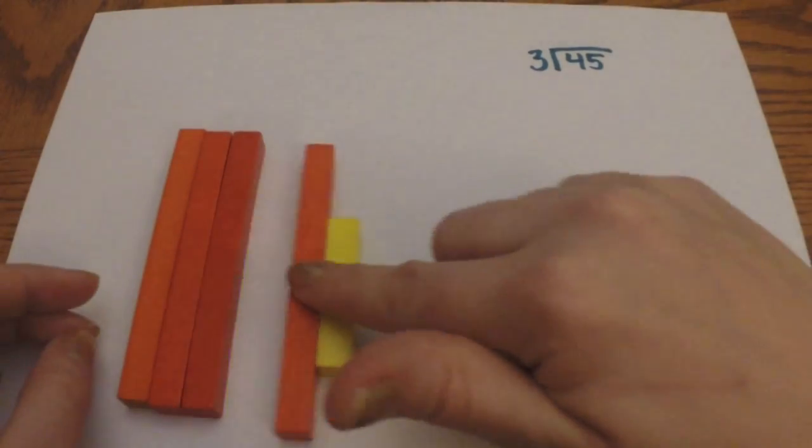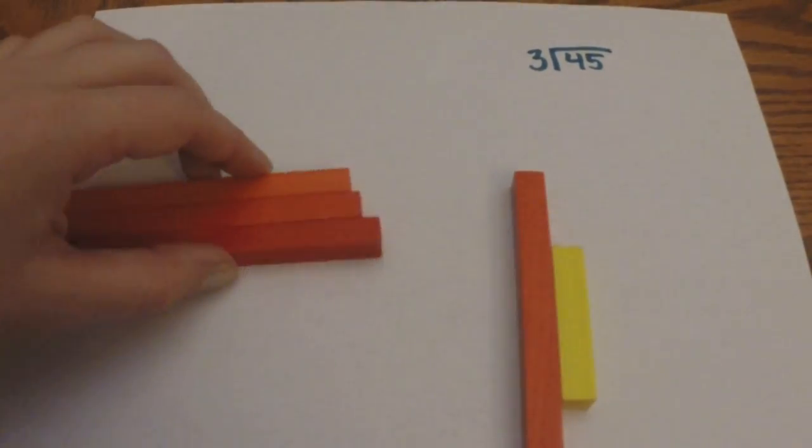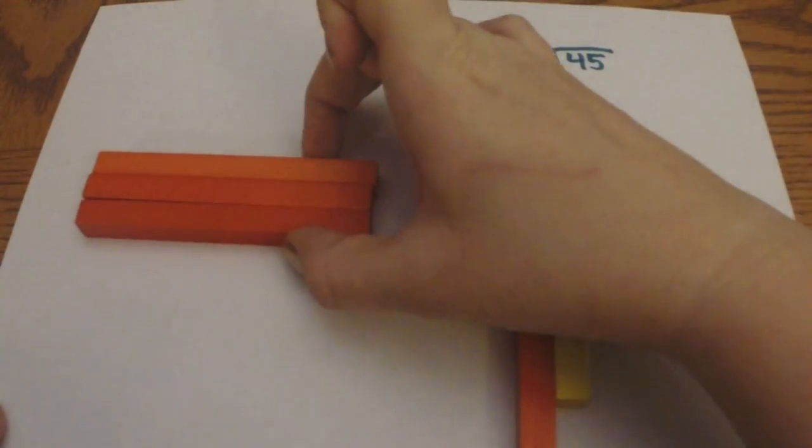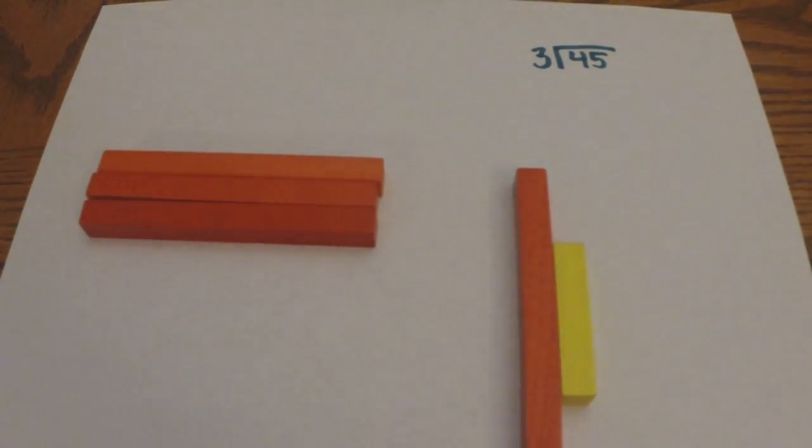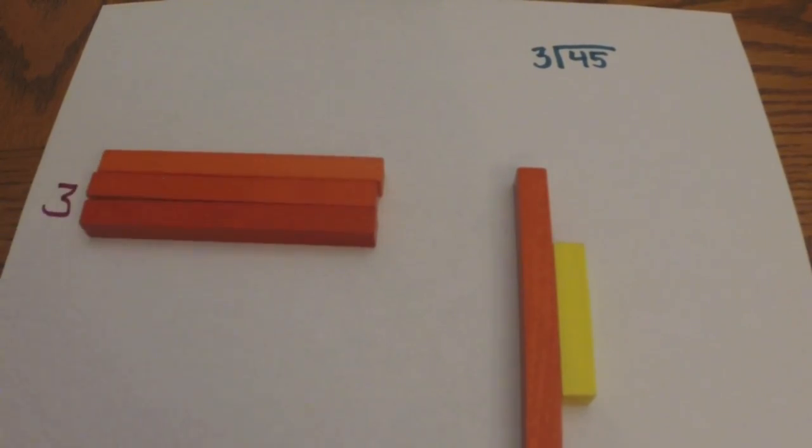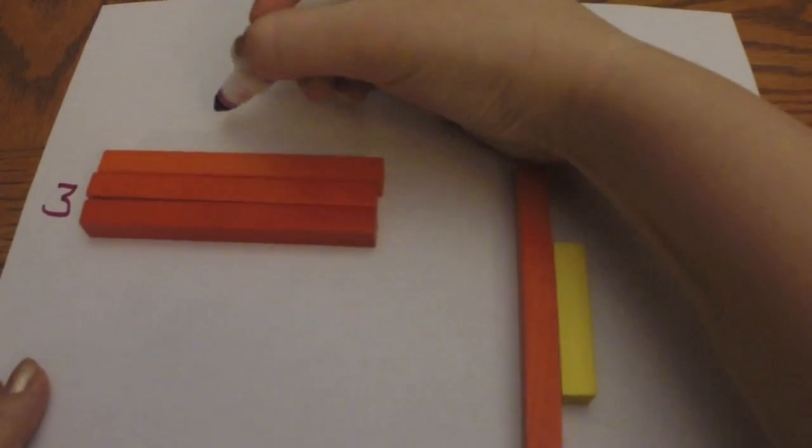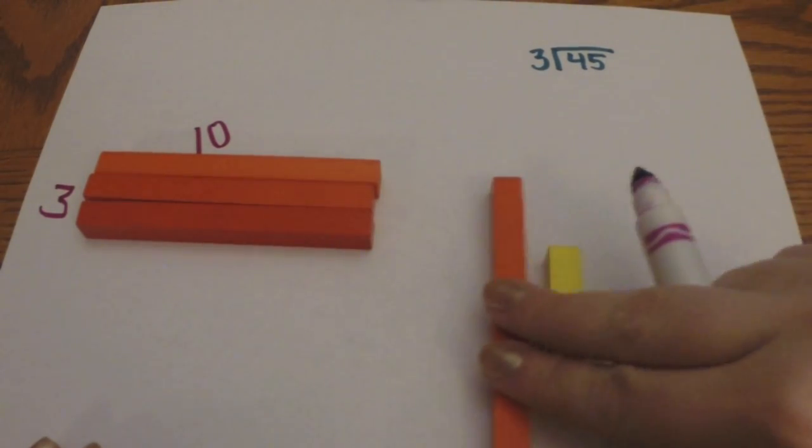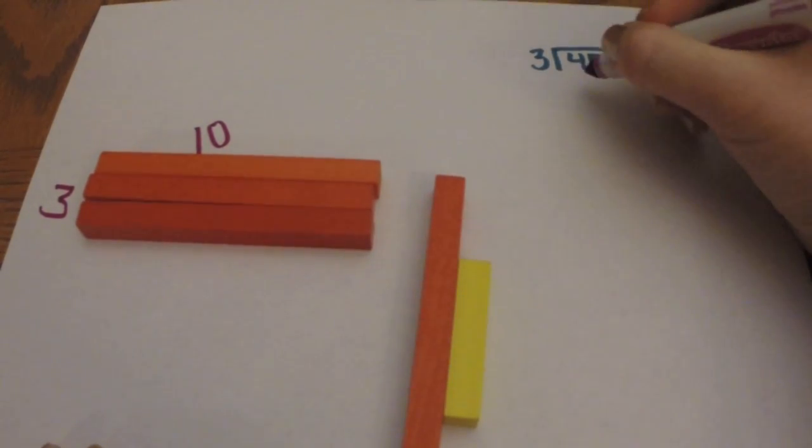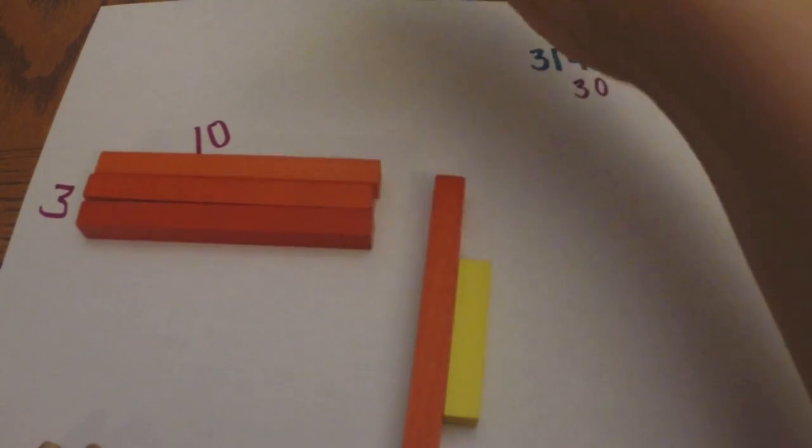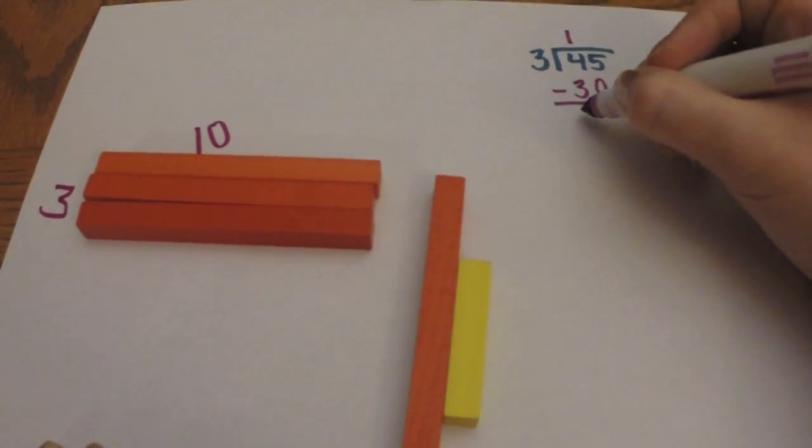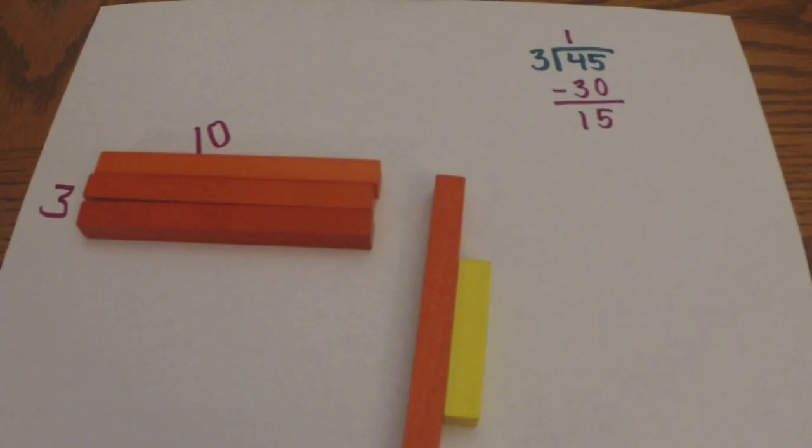So we move these ones out of the way a little bit. And right now we have a rectangle and it is three on this side and ten on the top. So we have three by ten, or thirty. So we can subtract thirty over here. And since we have a ten in the tens place, put one up there. And we can subtract, come down, and we have fifteen left still.